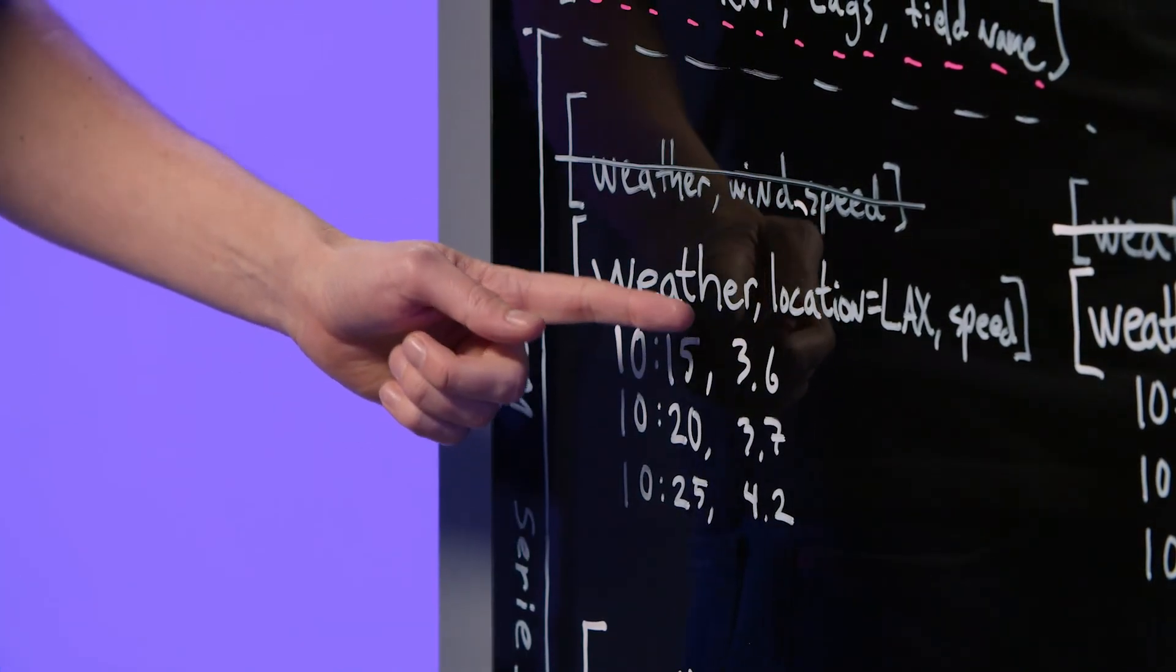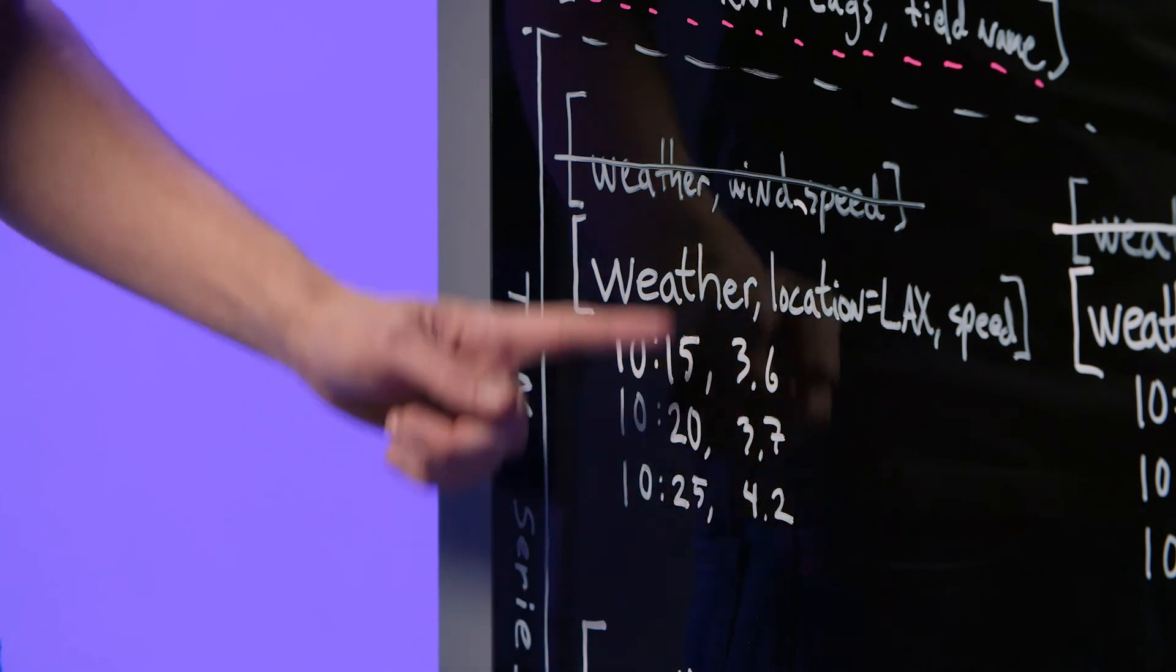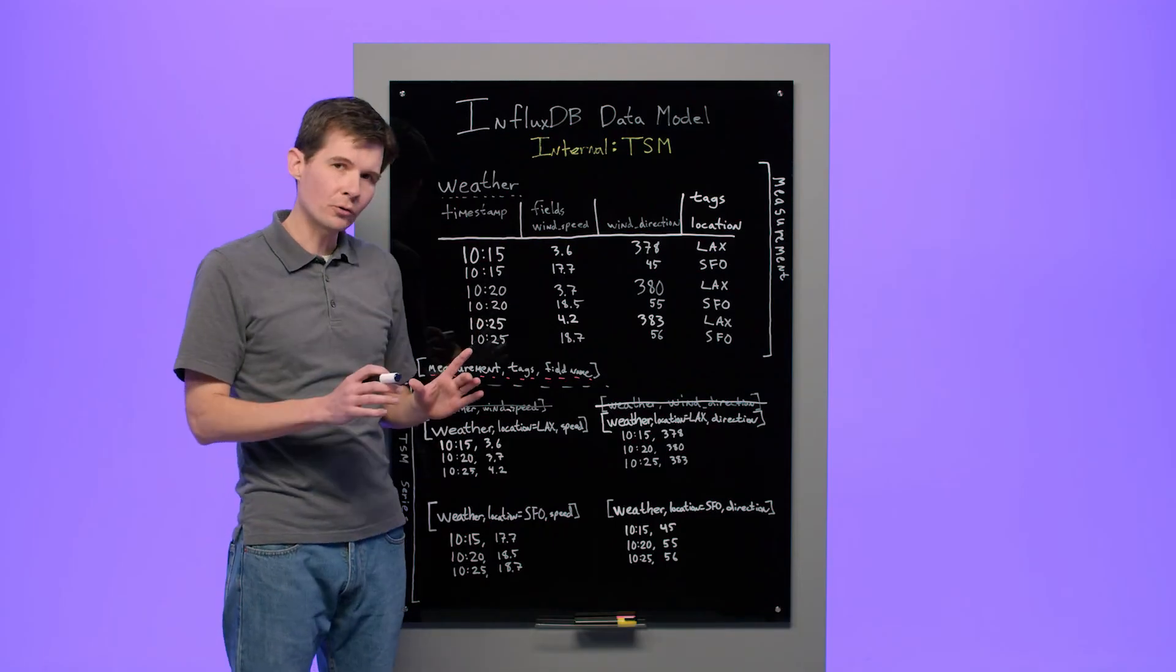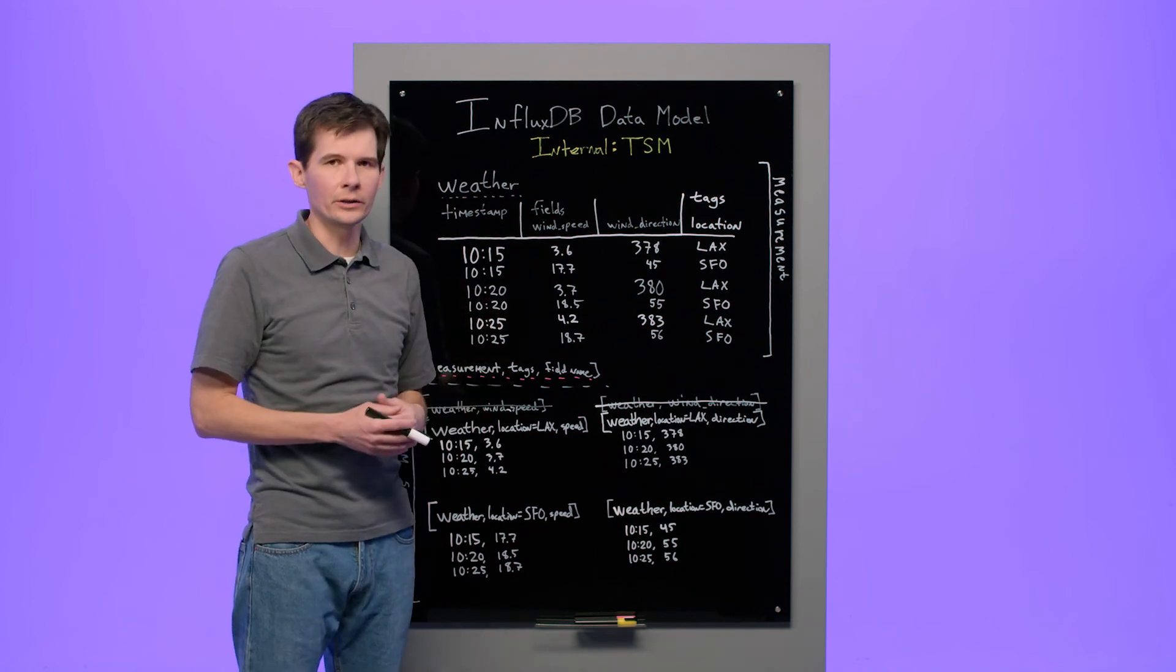A series is a value that changes over time. And TSM stores every series as a column on disk.